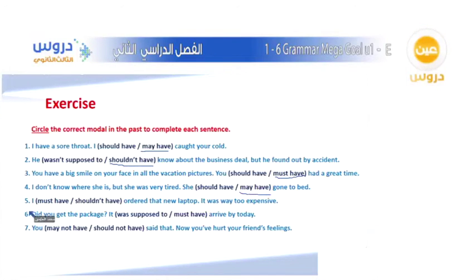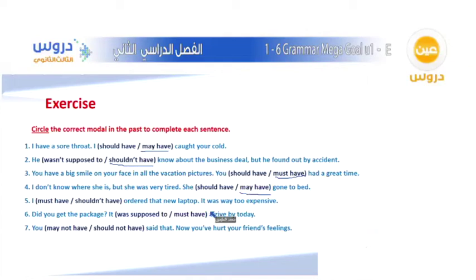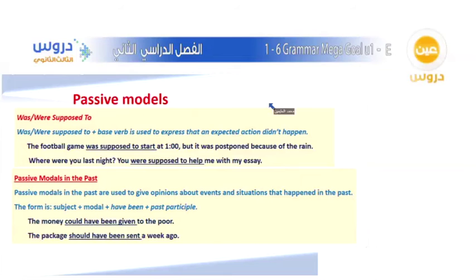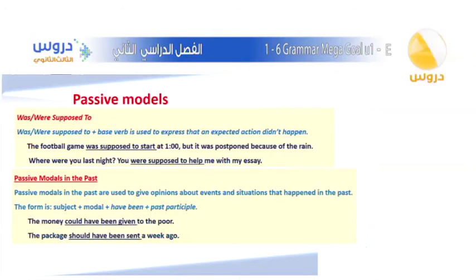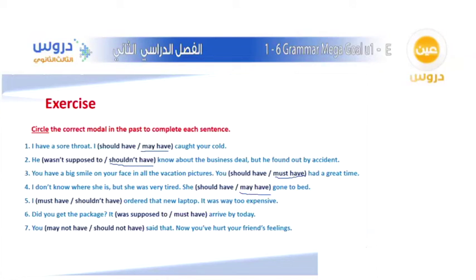Number five: I must have or shouldn't have ordered that new laptop — it was way too expensive. This expresses a mistake made in the past. With mistakes, we use should have or shouldn't have. The answer is shouldn't have.